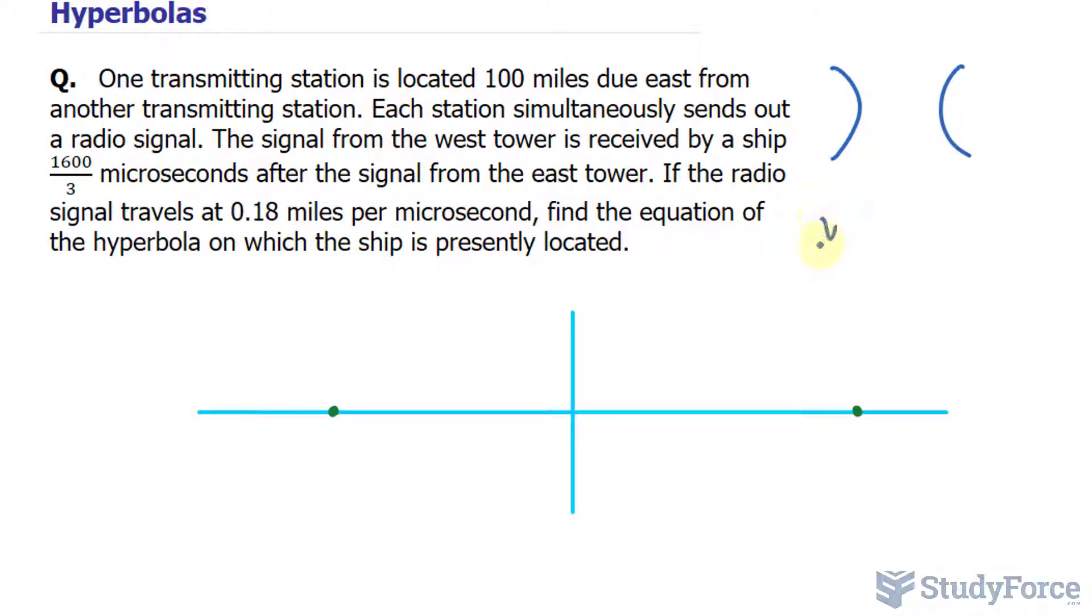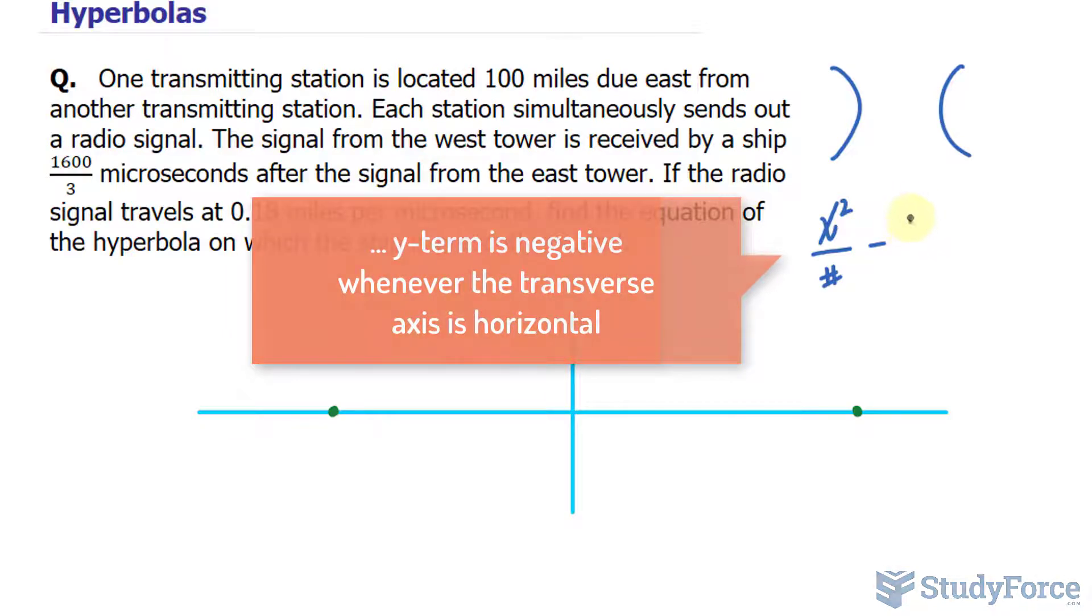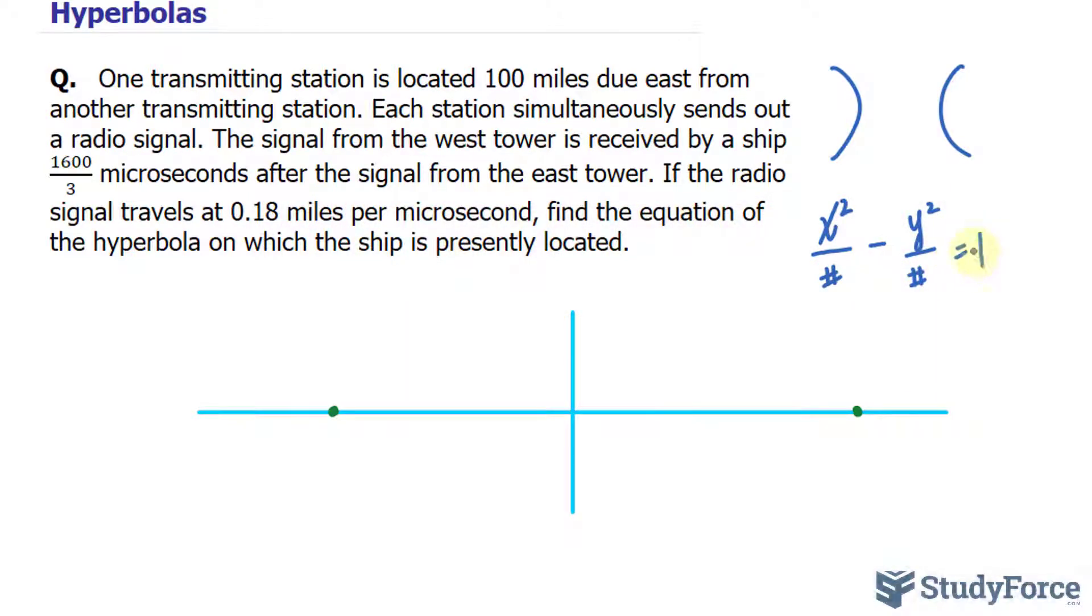The equation that we're supposed to produce is something that looks like this, where we have x squared over a number that we don't know, minus, and the reason why we're choosing minus over plus is because the transverse axis is horizontal. That's our assumption.